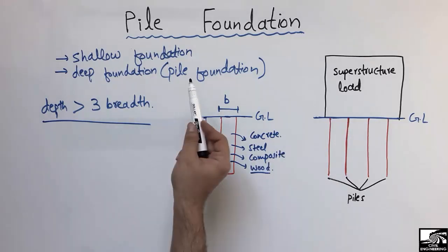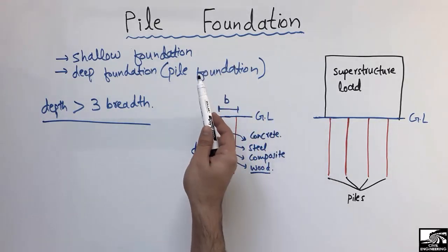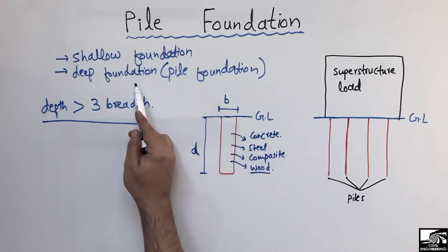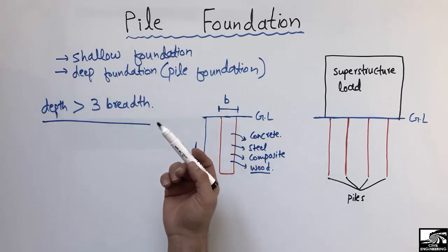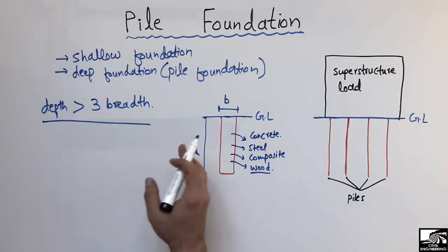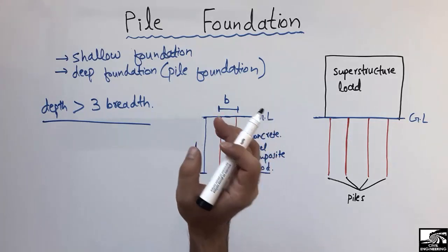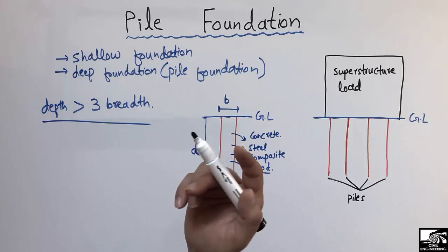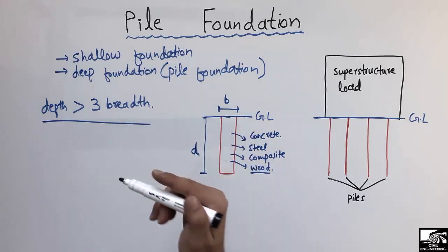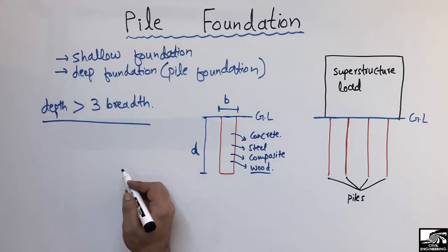After this short introduction, I can define pile foundation as a kind of deep foundation which is used to support the superstructure load and transfer the load either by end-bearing phenomena or by skin friction phenomena. Now let's understand what end-bearing and skin friction phenomena are and how they take the load from the superstructure.